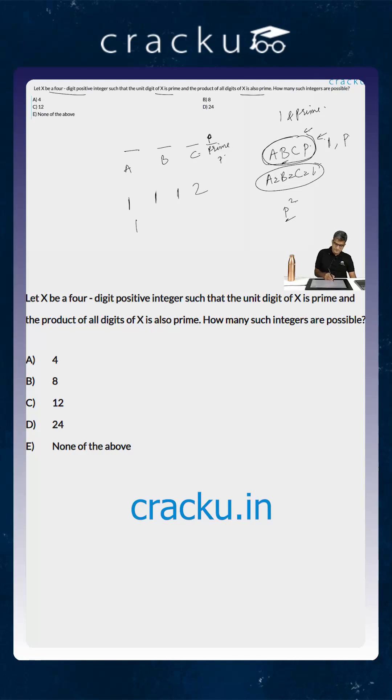So the last digit can be either 2 or it can be 3 or it can be 5 or it can be 7. So the total number of possibilities for this number is 4. So the correct answer is option A.